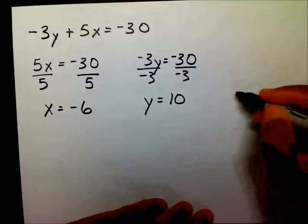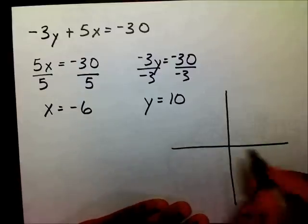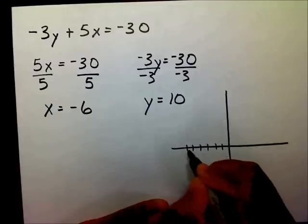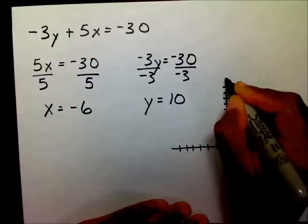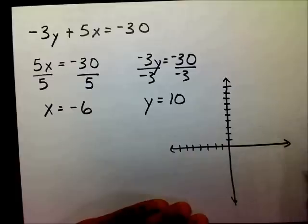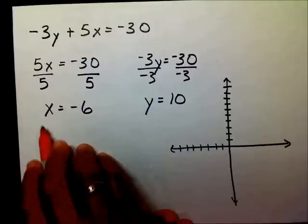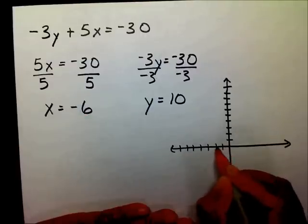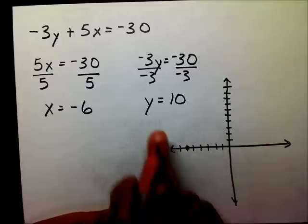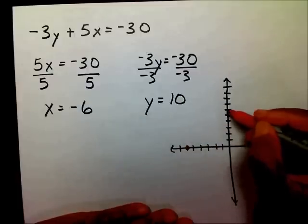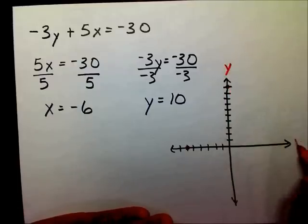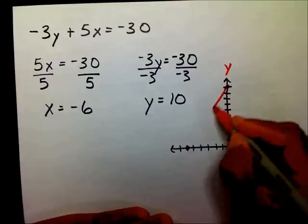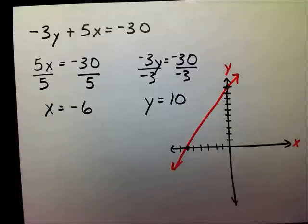If I want to graph it, my x-intercept is negative 6, so I'm going to put a dot on negative 6. My y-intercept is positive 10, so I'm going to put a dot on positive 10. Here's my y-intercept and here's my x-intercept. I'll draw my line — and there are my x and y-intercepts.